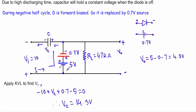The 5V source tries to drive current in one direction and the 0.7V source in the opposite direction. Therefore the output voltage Vo = 5V − 0.7V = 4.3V. So as long as the input voltage is at −10V, our output voltage will be equal to 4.3V.